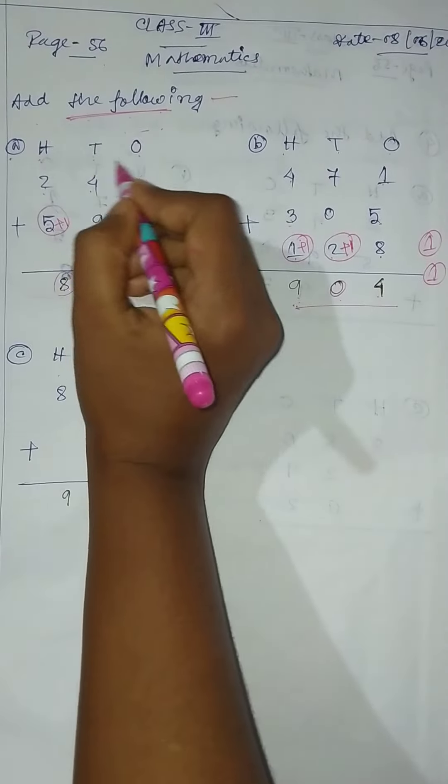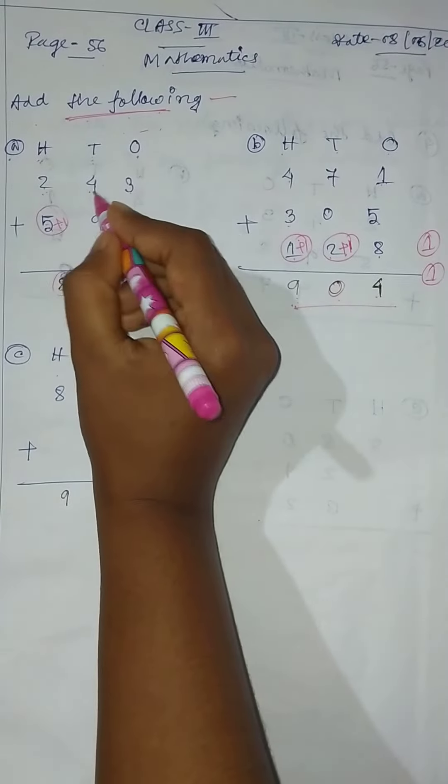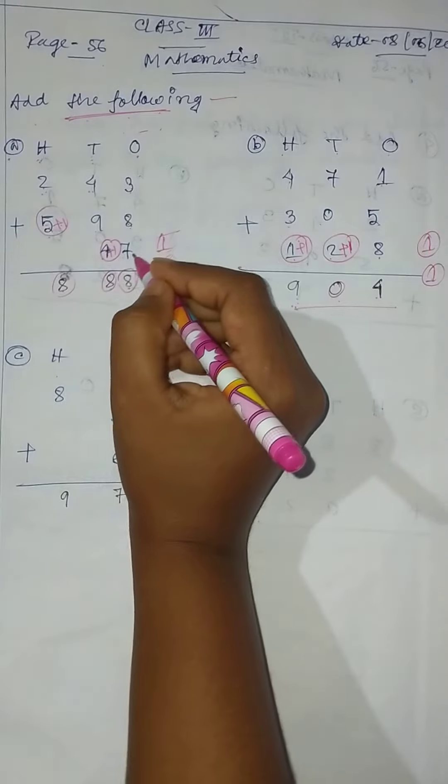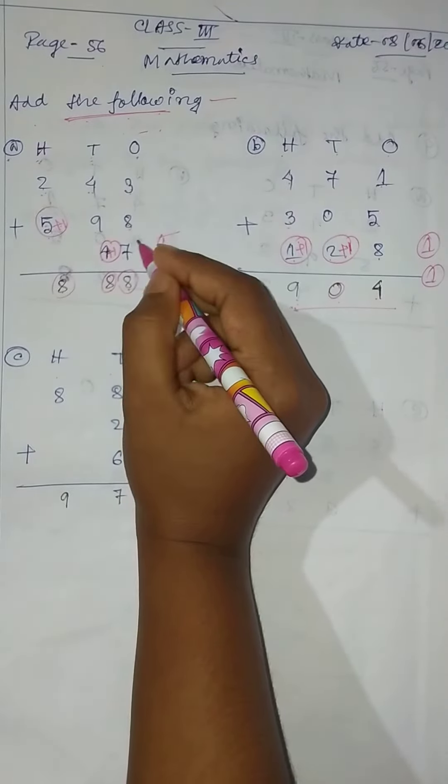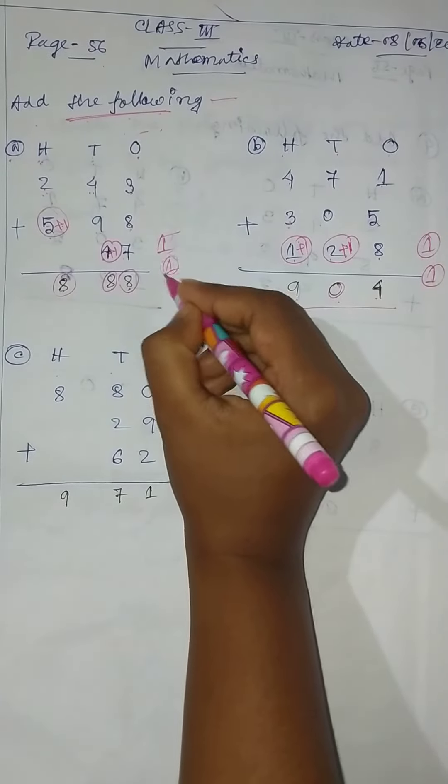add the following. 1 stands 100, so 243 plus 598 plus 47. So 8 plus 7 equal to 15, 15 plus 3 equal to 18, so 18, write 8 and 1 carry.